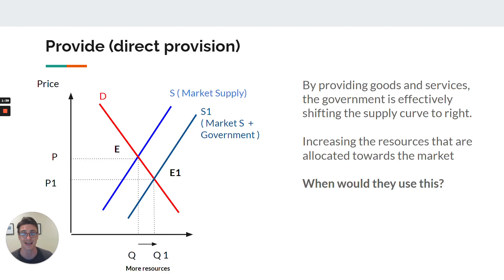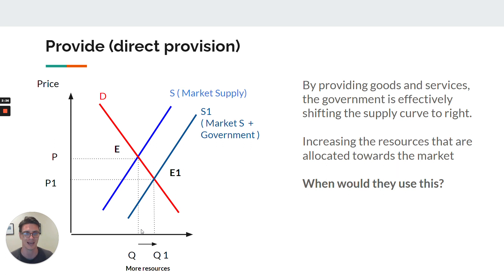First, direct provision. As the name suggests, it's the government directly providing goods or services — it's the government effectively adding to the market supply by supplying goods and services themselves. This increases the supply curve — you can see a shift to the right. S1 is the market supply without any government intervention, the free and competitive market. S2 is when the government intervenes, so we have the market supply plus the government's supply of that particular good or service. This increases the quantity traded from Q to Q1.